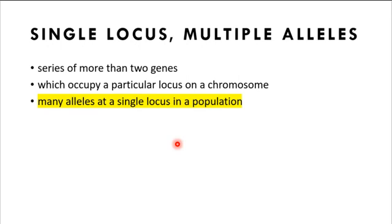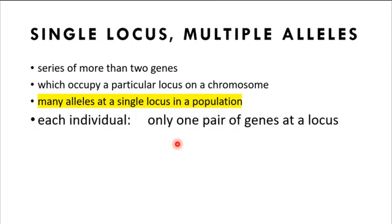and of a specific group of individuals. But please take note that even if there are many alleles present at a particular locus, each individual may have only one pair of genes at a particular locus. And the individual must be either homozygous or heterozygous.